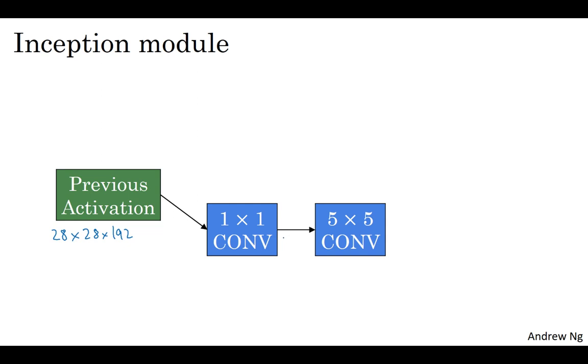Maybe the one by one has 16 channels, and then the five by five will output a 28 by 28 by let's say 32 channels.